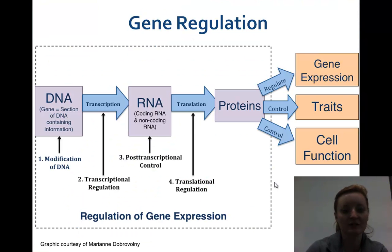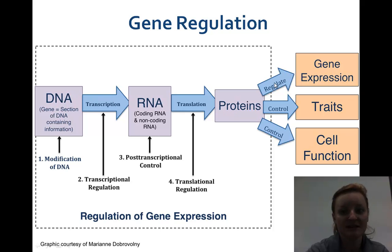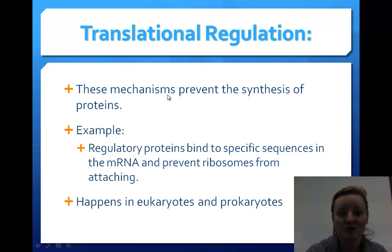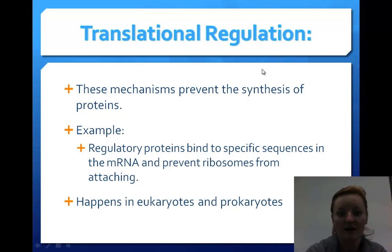The next step is translational regulation. Once we translate, that affects our proteins, which regulates gene expression, our traits, and cell functions. Translational regulation prevents the synthesis of proteins — for example, regulatory proteins bind to specific sequences in the mRNA and prevent ribosomes from attaching. If the ribosome cannot translate, we will not make a protein. This happens in both eukaryotes and prokaryotes.